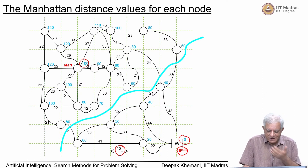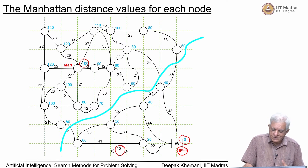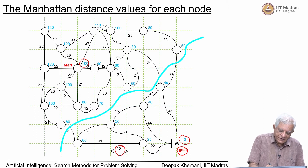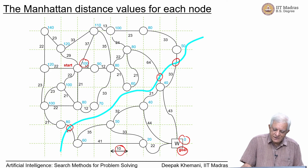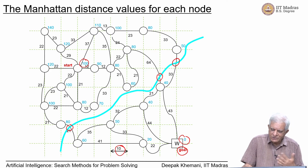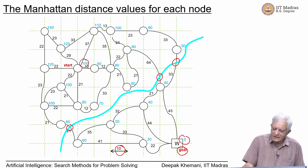There is also an imaginary river drawn which you cannot cross in any place — there are only three places where you can imagine a bridge. Any path from the start node to the goal node will have to go through one of these river crossings or bridges.